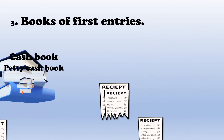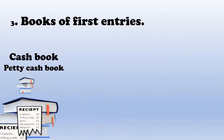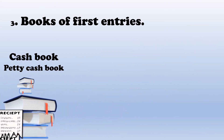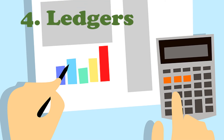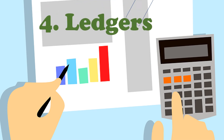We record these documents in the books of first entry. All the receipts must be recorded in the books of first entry, or the books of the business. Some examples of books of first entry include the cash book and petty cash book.